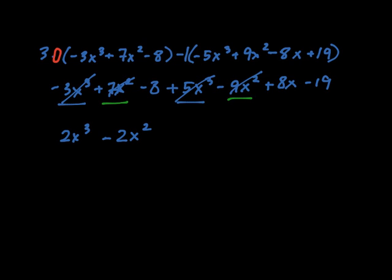And then we have 8x. We don't see any kind of x's on the first polynomial, so that's plus 8x. We have a negative 8 and a negative 19. That's a negative 27.